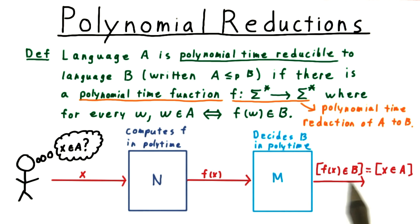By the way, this square bracket notation means 1 if the expression inside is true, and 0 otherwise.